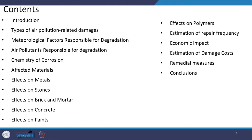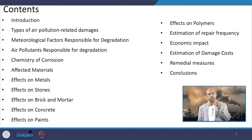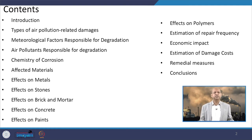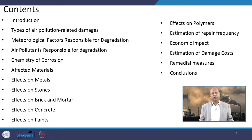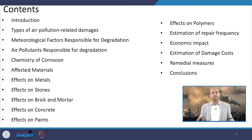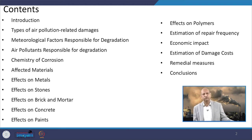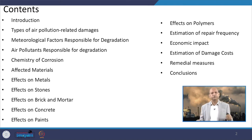You can see the content list for today's lecture. There will be a brief introduction, then the types of air pollution related damages which occur to building materials and structures. Then the meteorological factors which are responsible for — or enhance — the degradation because of air pollution. And then the air pollutants which are known for degrading building material. Then the chemistry of corrosion, because corrosion and abrasion are very important factors when we talk about the relationship of air pollution with weathering of building material.